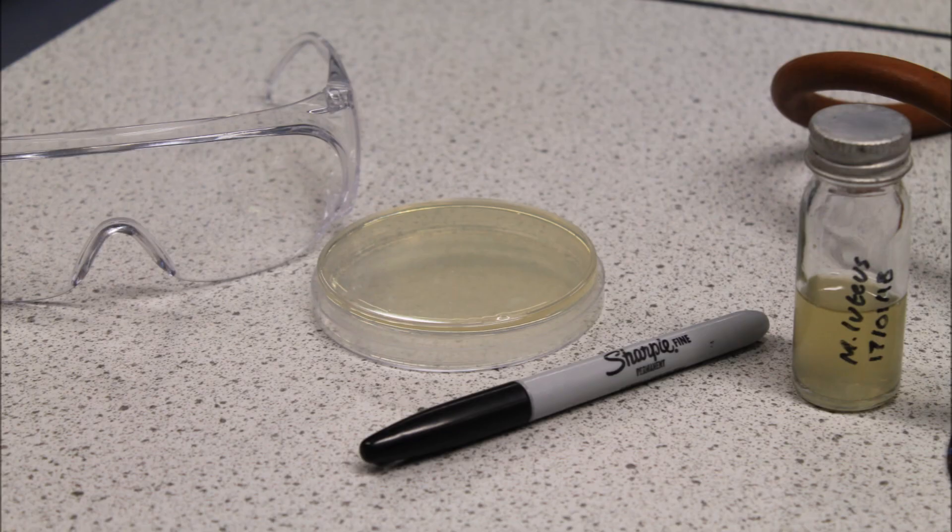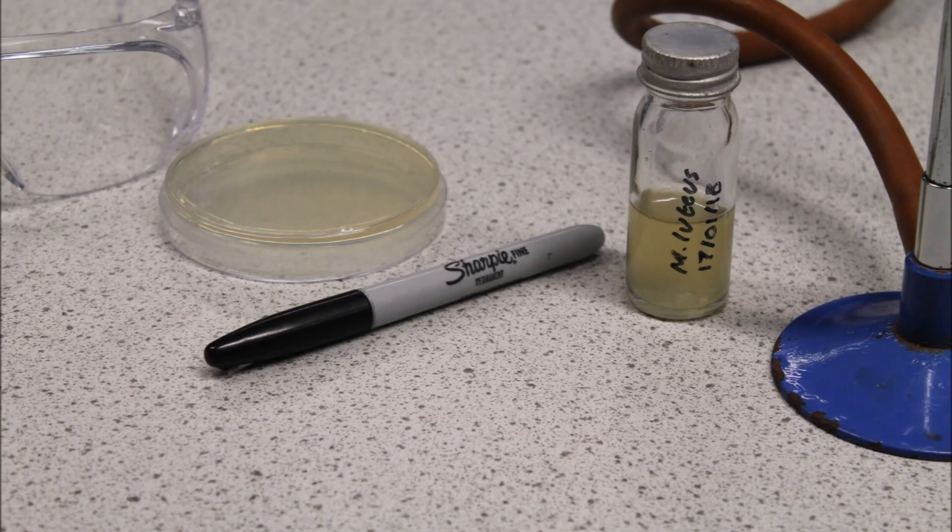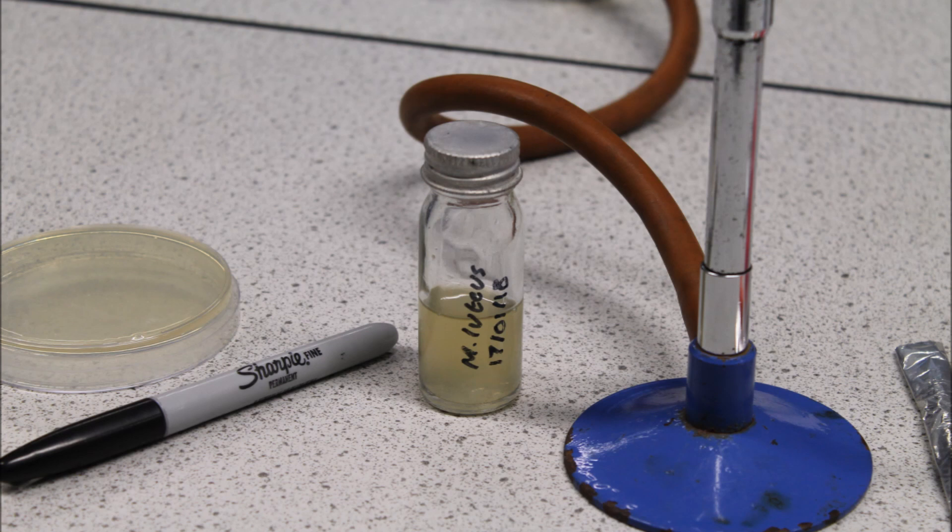Eye protection, a sterile agar plate (that is to say a plate which has been treated at high temperature and pressure so it is completely clean and free of microorganisms), a marker pen, and a bacterial culture. Here we have a culture of Micrococcus luteus.